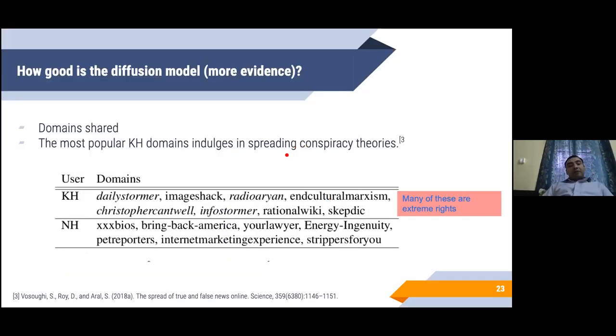To gather more evidence, we try to see what are the different URLs that the hateful users typically share in their posts. Many of the URLs that the hateful users share along with their posts represent extreme right URLs, represent contents that are extreme right in nature, which is not true for the non-hateful users. With all these evidences, we know that whatever we have obtained from the DeGroot model can be considered to be reliable annotations of hateful and non-hateful users.